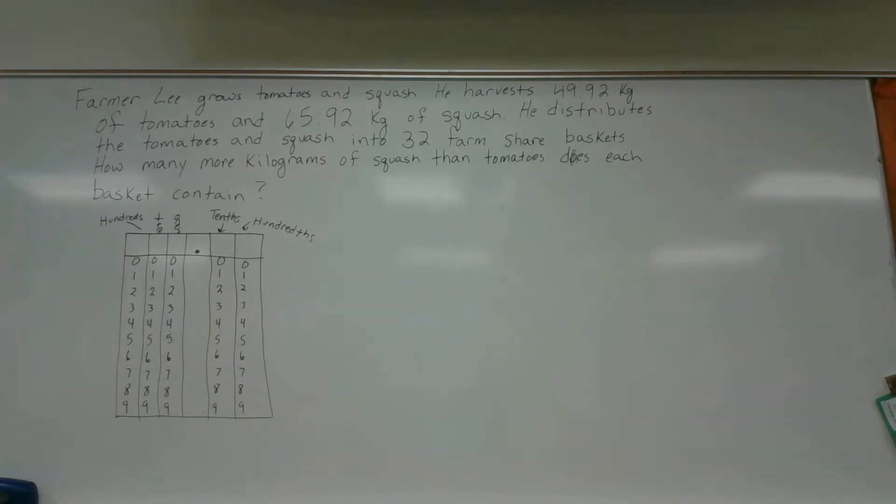So let's look at this first problem. Actually, it's the second problem on the test that you'll take next week. Farmer Lee grows tomatoes and squash. He harvests 49 and 92 hundredths kilograms of tomatoes and 65 and 92 hundredths kilograms of squash. He distributes the tomatoes and the squash into 32 farm share baskets. How many more kilograms of squash than tomatoes does each basket contain?